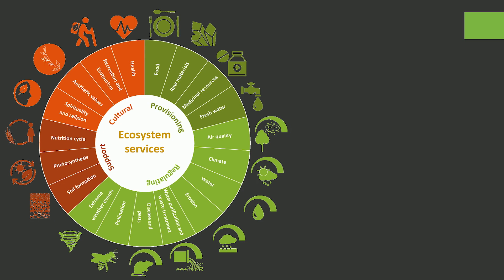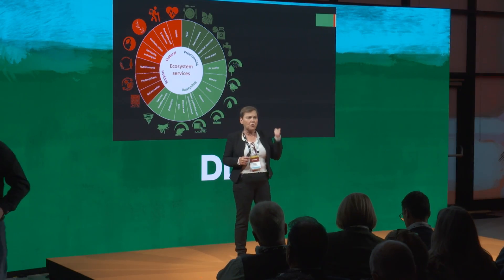Whenever an ecosystem works for us, we are talking about ecosystem services, and Maria already mentioned a couple of them: pollination, carbon sequestration, fertile soil. Here you see the entire array of ecosystem services, and there are only three things you have to remember. First, ecosystem services have an enormous economic value. Second, they are the basis of life. And third, they cannot be replaced by us.